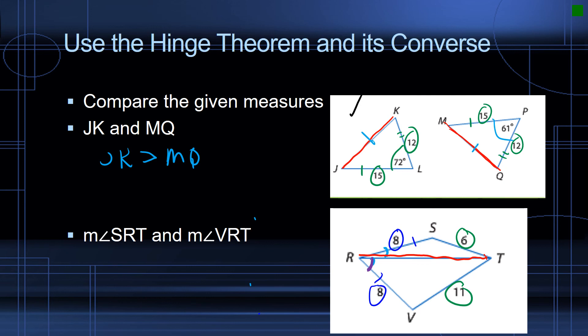Anyone, anyone, anyone? Well, the measure of angle SRT, as I'm sure you're shouting out in class, is going to be less than the measure of angle VRT. And that's based on the converse of the Hinge Theorem, which is looking at comparing side, side, side to given angles. Isn't this fun? Thank you.